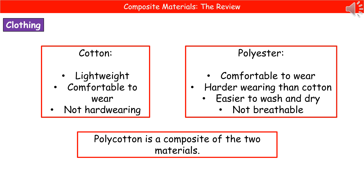Another common composite material is one that you're probably wearing right now. We can have cotton and we can have polyester. Cotton is lightweight and comfortable to wear, but it's not particularly hard wearing. Whereas polyester is harder wearing than cotton and easier to wash and dry, but it's not breathable — meaning you get that clammy feeling because it doesn't allow sweat to evaporate easily.